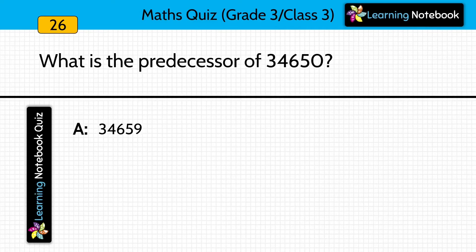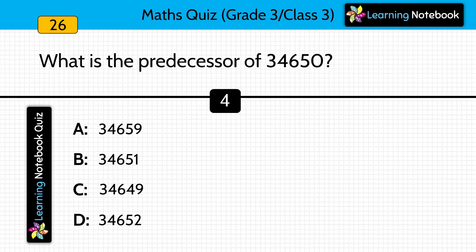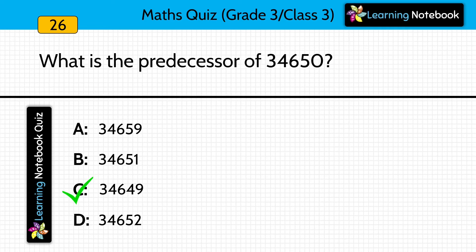What is the predecessor of 34,650? Answer is 34,649. This is the predecessor of 34,650.